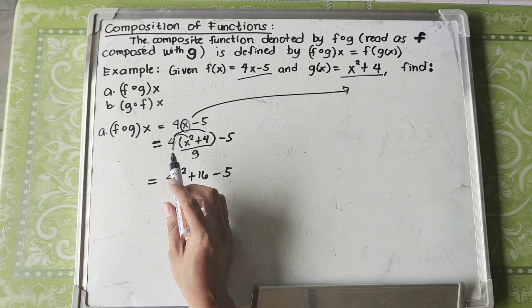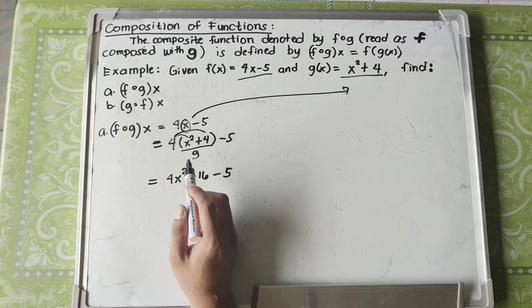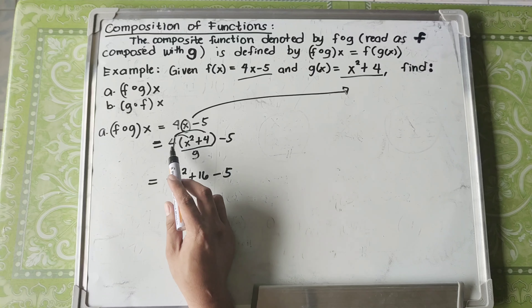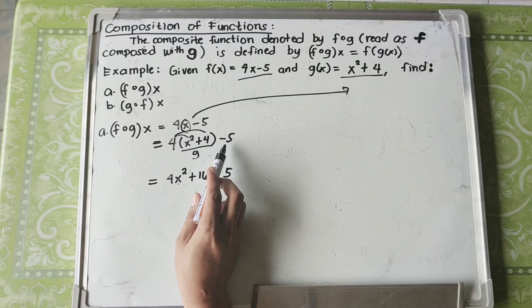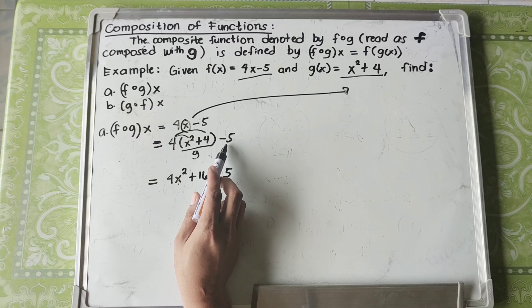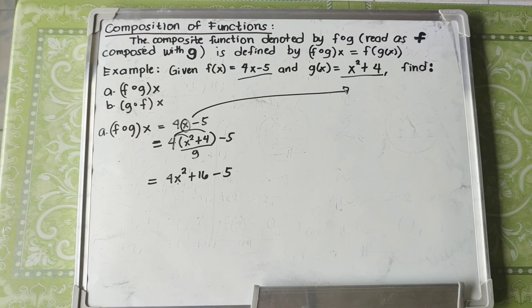We distribute 4 to the parenthesis: 4 times X squared is 4X squared, and 4 times 4 is 16. Copy minus 5. Note that 4 is not distributed to negative 5 because negative 5 is not inside the parenthesis — only X squared and 4 are inside.